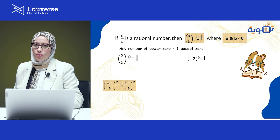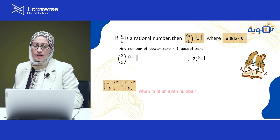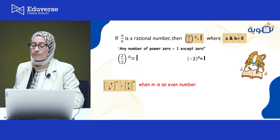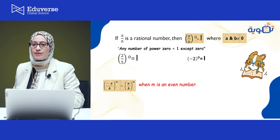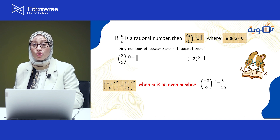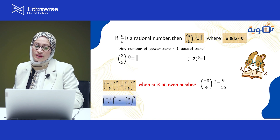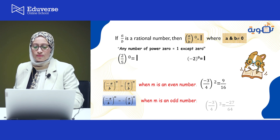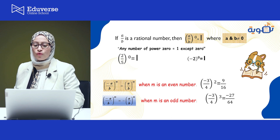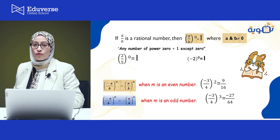Let's take another rule. What if the number is negative? If (−a/b) is raised to the power m, and m is an even number — meaning divisible by 2, like 2, 4, 6 — then the result is always positive. For example, (−3/4)² = +9/16. But if the power is odd — not divisible by 2, like 3, 5, 7 — the negative stays. For example, (−3/4)³ = −27/64.